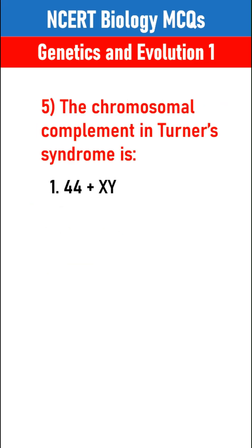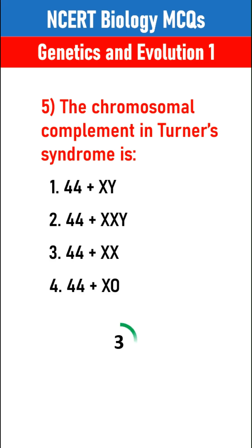The chromosomal complement in Turner's syndrome is 44 plus XO.